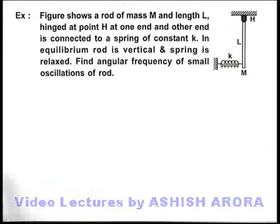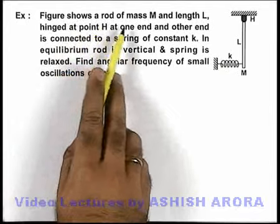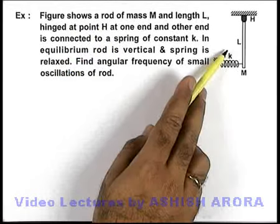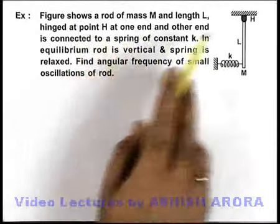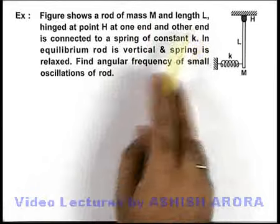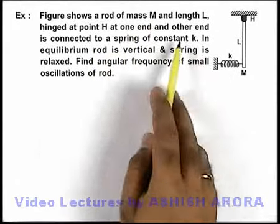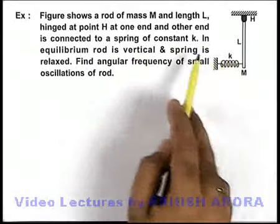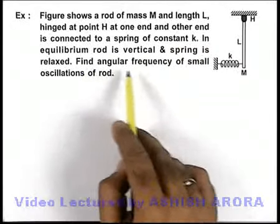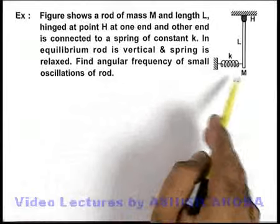In this example, we are given a figure showing a rod of mass M and length L, hinged at point H at one end, and the other end is connected to a spring of constant k. In equilibrium the rod is vertical and spring is relaxed. We are required to find the angular frequency of small oscillations of this rod.